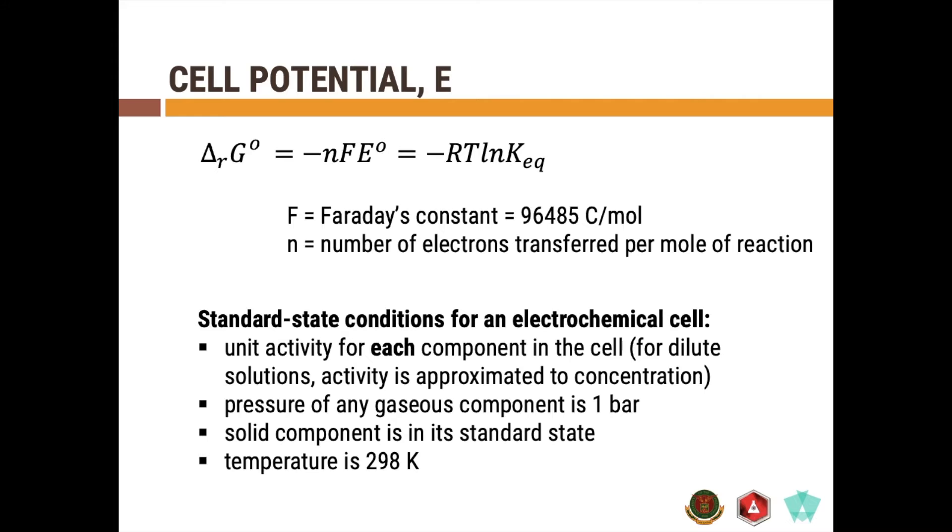For an electrochemical cell, an electrochemical cell is said to be operating under standard state conditions if the unit activity or essentially the concentration of your component is diluted. So it is required for the solutions to be diluted wherein the activity is approximated to be equal to the concentration, and the pressure of any gaseous component should be at one bar and the temperature is at 298 Kelvin. If there is a solid component present in your electrochemical cell, then that solid component must be in the standard state as well.